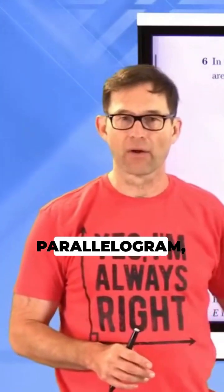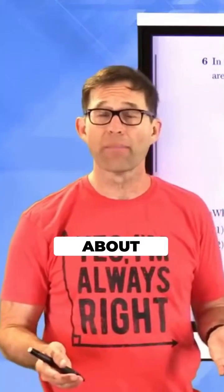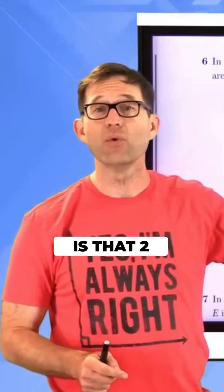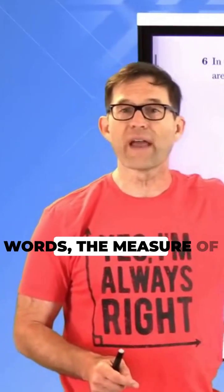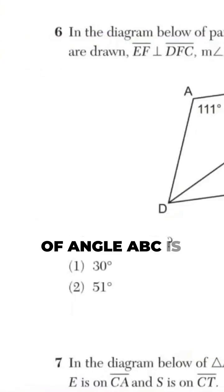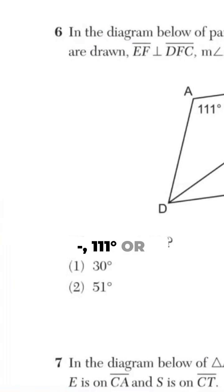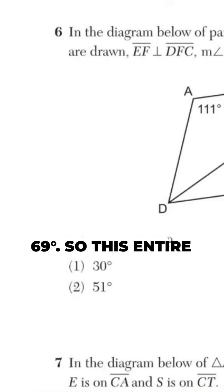What else do I know? I know that this figure is a parallelogram, and one of the things I should have learned about parallelograms is that two consecutive angles are supplementary. In other words, the measure of angle ABC is 180 degrees minus 111 degrees, or 69 degrees. So this entire angle from here to here is 69 degrees.